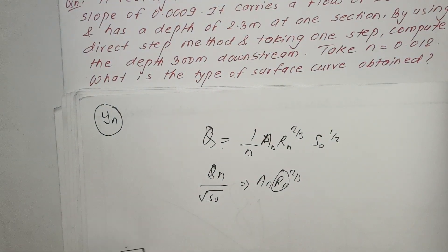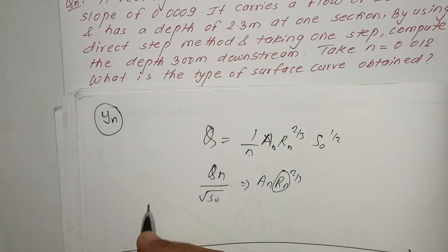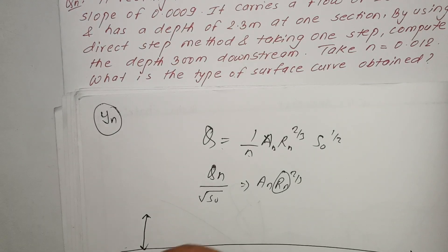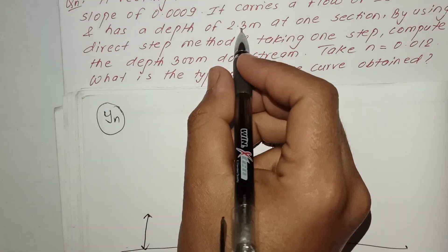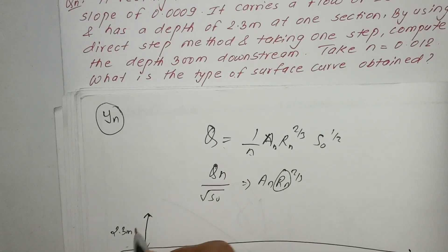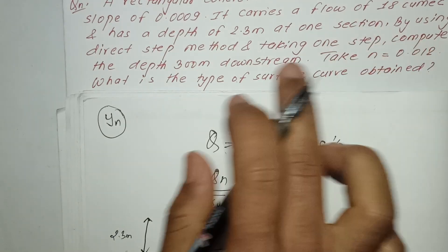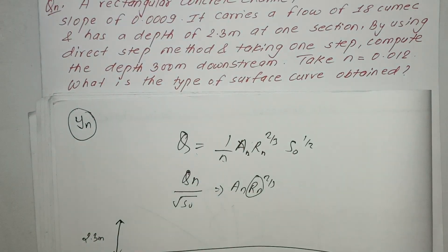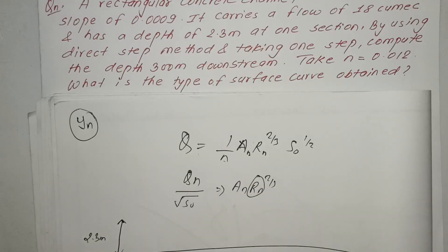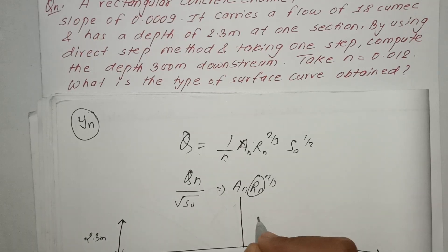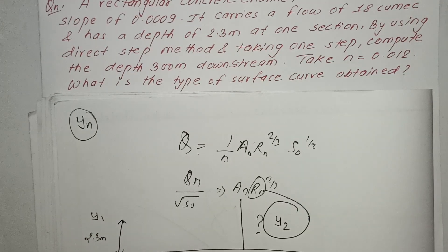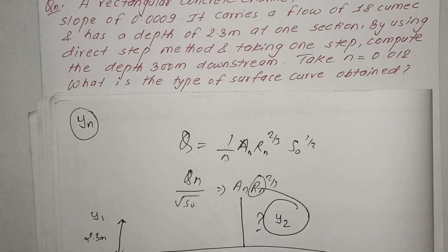This is the flow section. By using the direct step method and taking one step, we analyze the flow section to determine the downstream depth.